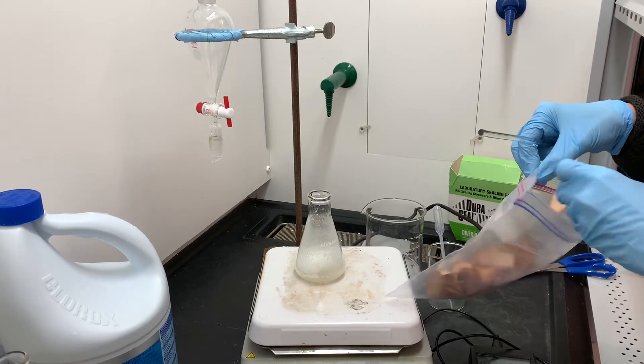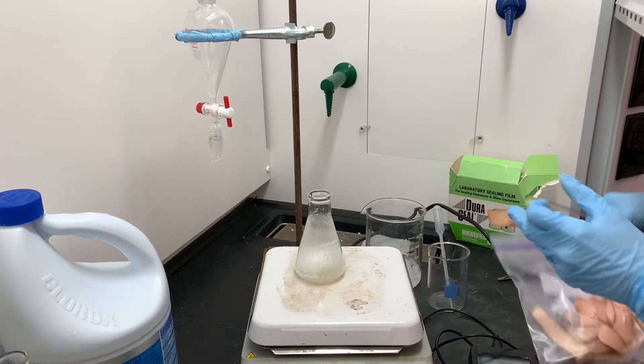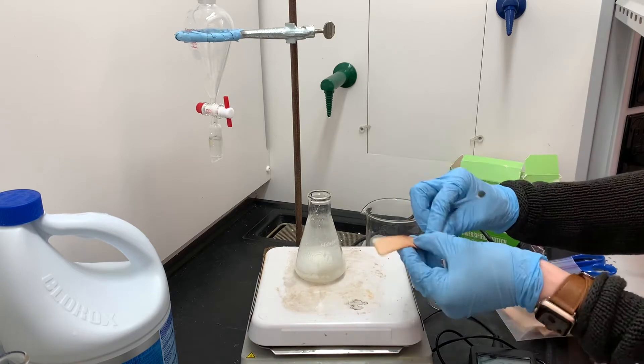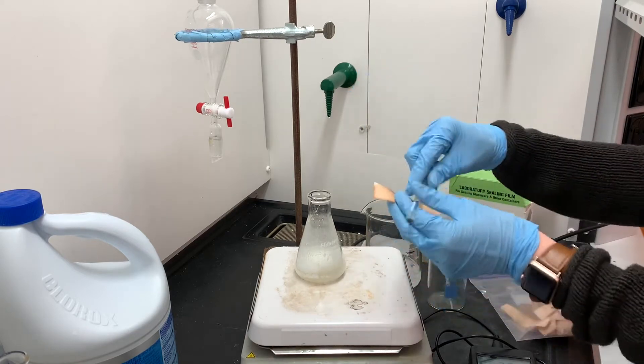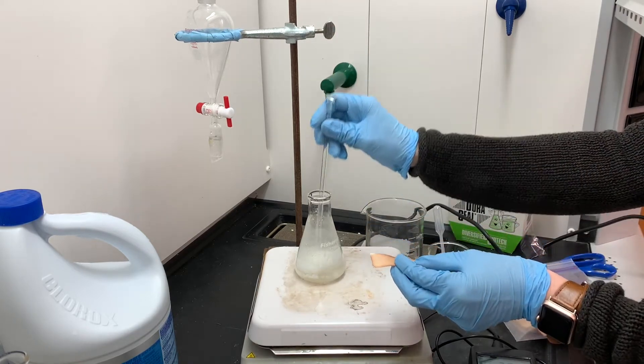I'm just going to be testing a little bit of the solution. If we have excess bleach present, I'm going to get a really dark blue, kind of black color on the starch iodide paper.